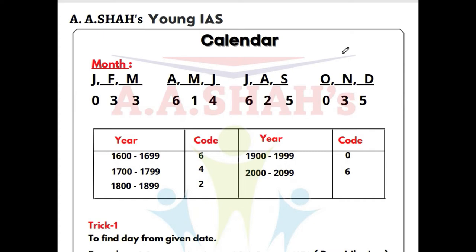Since there are 12 months in a year, we will take 3 months together. The groups are: January, February, March; then April, May, June; then July, August, September; then October, November, December. So 3 months together in each group.